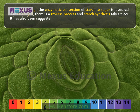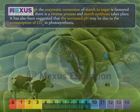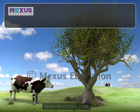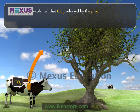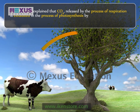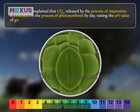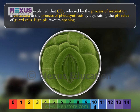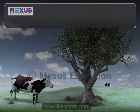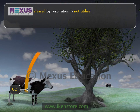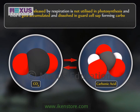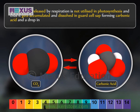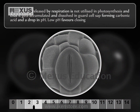It has also been suggested that the increased pH may be due to the consumption of CO2 in photosynthesis. Scarth, in 1932, supported Sayeri's view. He explained that CO2 released by the process of respiration is exhausted in the process of photosynthesis by day, raising the pH value of guard cells. High pH favours opening of the stomata. At night, CO2 released by respiration is not utilised in photosynthesis and thus gets accumulated and dissolved in the guard cell sap, forming carbonic acid, resulting in a drop in pH. Low pH favours closing of the stomata.